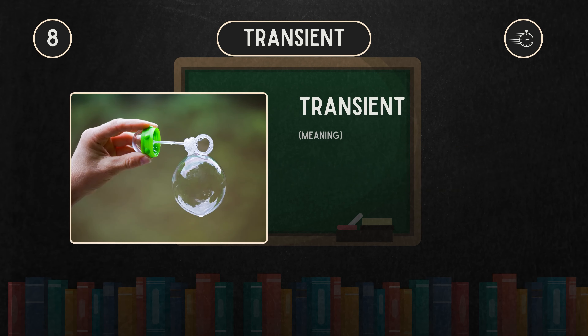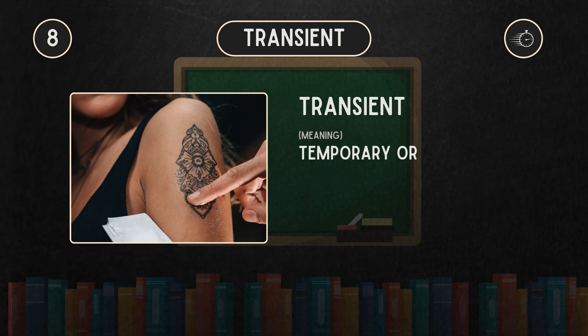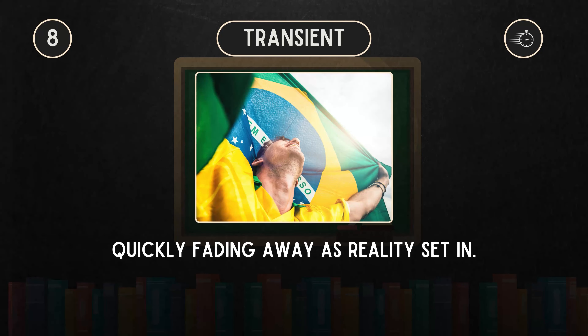Transient refers to something that lasts for only a short time, temporary or impermanent. For example, the joy of winning the game was transient, quickly fading away as reality set in.